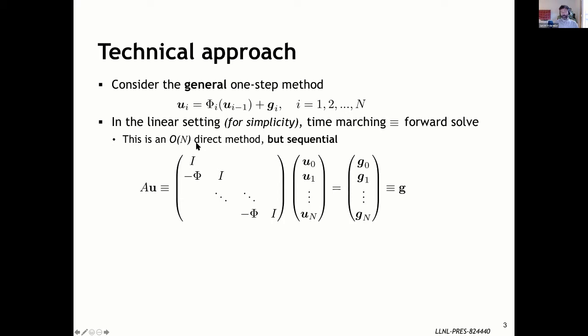In a linear setting, just for simplicity on this slide, you get this system of equations with identity on the diagonal and negative phi on the subdiagonal. If you were to solve this system — it's lower triangular with forward substitution — you get sequential time marching. U_0 equals G_0, then U_1 equals phi applied to U_0 plus G_1.